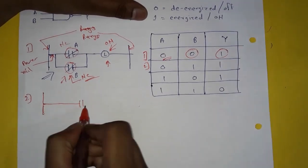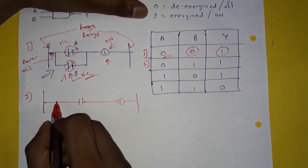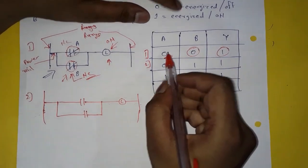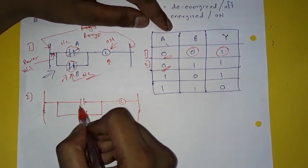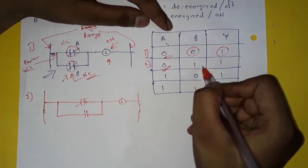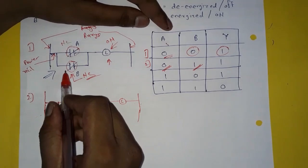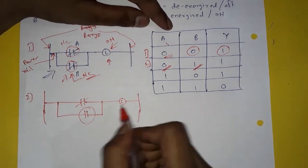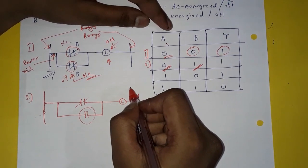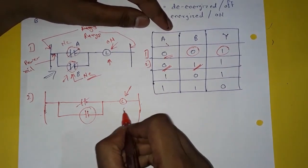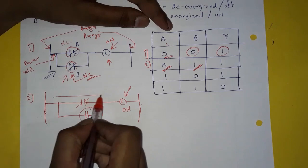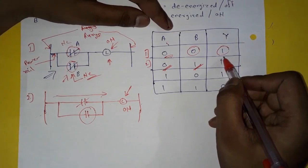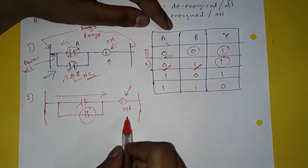In the second condition, A is de-energized so it remains in normally closed condition. B is energized, so the contacts of B get open. In this case the lamp will still glow and turn on because the current will flow through A's closed contact. So Y is 1 — it is on in the second condition.